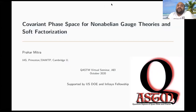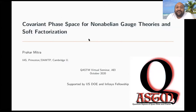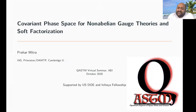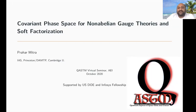It's a great pleasure to have Dr. Prohor Mitra, who is basically a new postdoc at DMTP Cambridge University and just moved from IAS Princeton. This is his second postdoc — he did the first postdoc at IAS and did his PhD from Harvard University with Andrew Strominger. His expertise area is quantum field theory, string theory, and quantum gravity. He will talk about covariant phase space for non-abelian gauge theories and soft factorization.